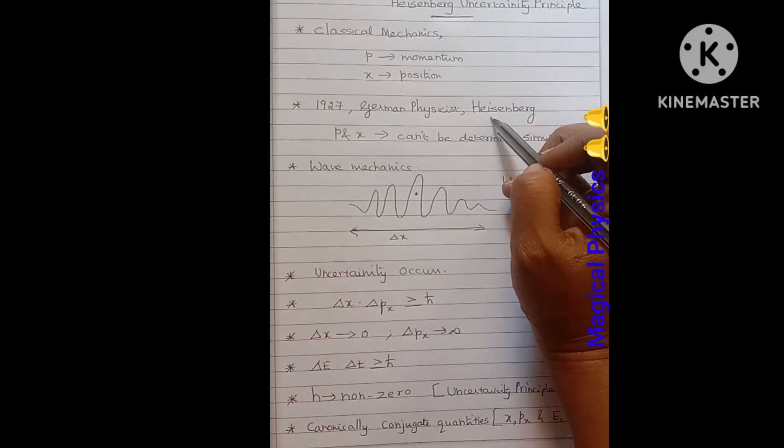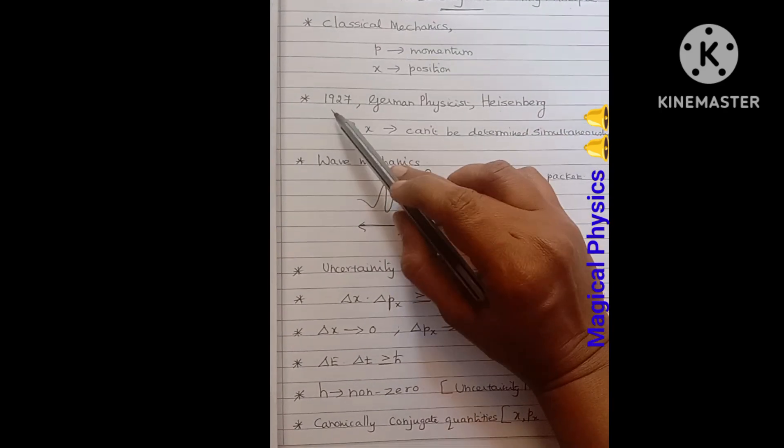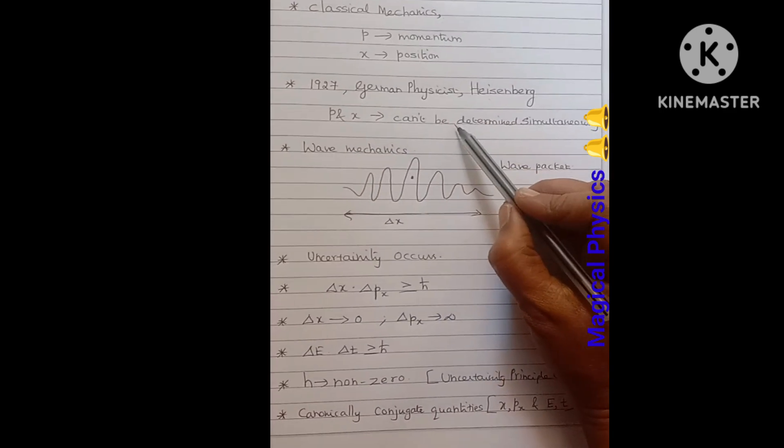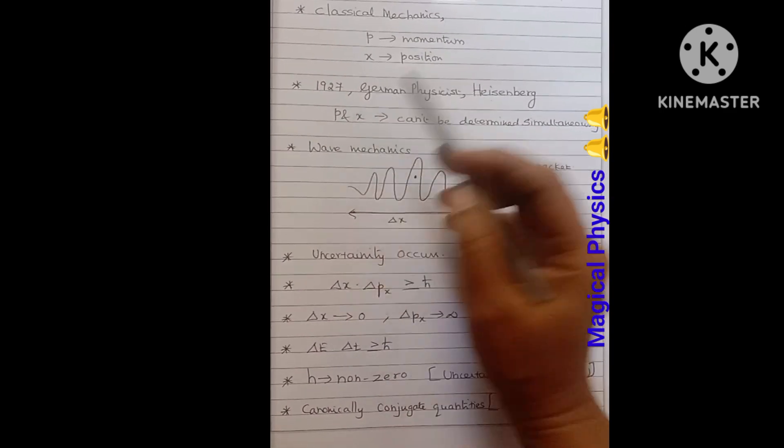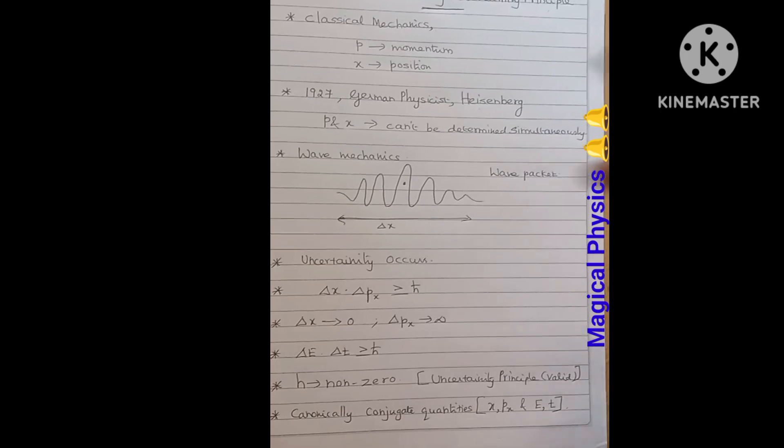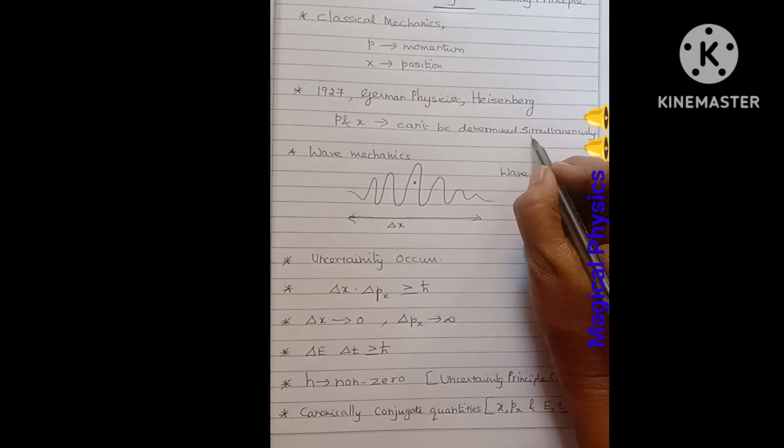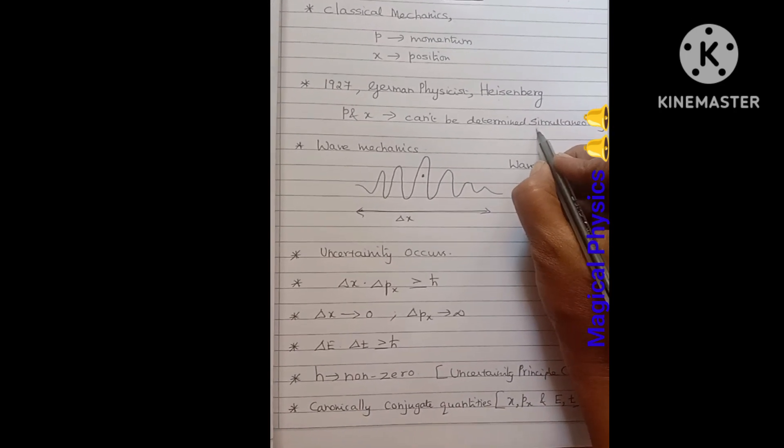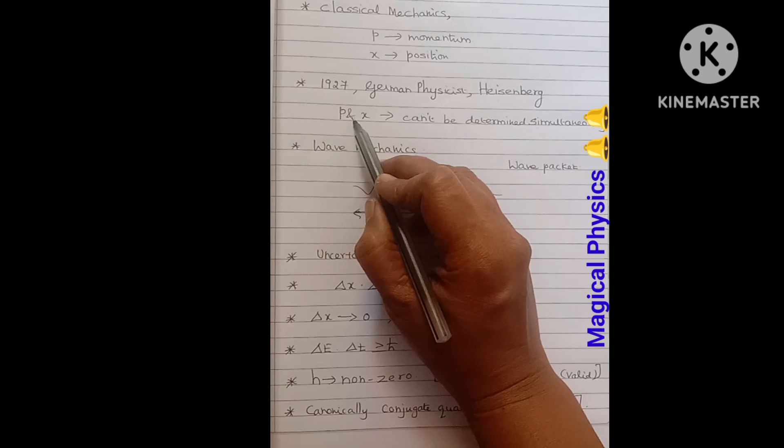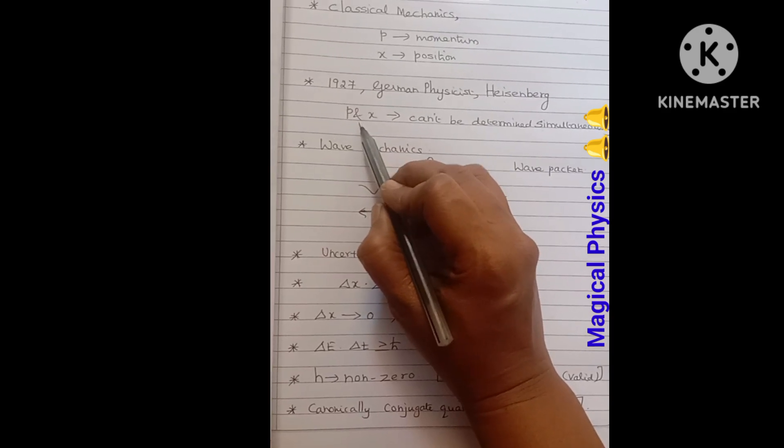But Heisenberg, a German physicist, in the year 1927, said that position and momentum cannot be determined simultaneously. That means at a time we can't predict and tell the position as well as momentum values.